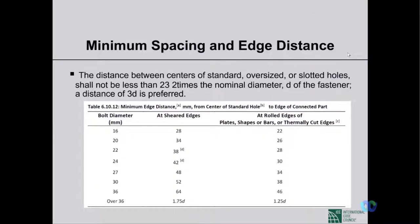Minimum bolt spacing center-to-center should not be less than approximately 2.5 times the nominal bolt diameter, though 3 times the diameter is preferred and commonly practiced. Minimum edge distance depends on bolt diameter and edge type — sheared edges (produced by plate cutting) require more edge distance than rolled edges.